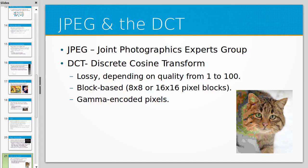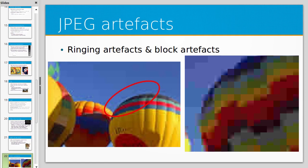JPEG stores information using the discrete cosine transform, which is a lossy transform. You can see images going from low to high quality to show the pixelation that results. It's block-based, operating on 8x8 or 16x16 pixel blocks, and uses gamma-encoded pixels. There are various artifacts — a common one is ringing near edges, where the DCT approximation produces strange blocky artifacts.